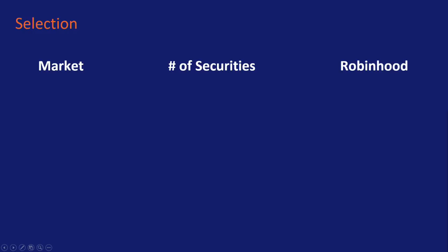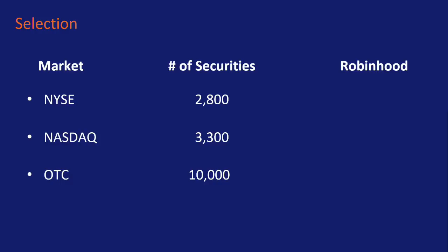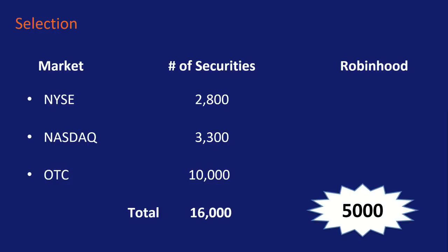Next, let's look at selection — the markets available. On the New York Stock Exchange there are roughly 2,800 securities; NASDAQ has roughly 3,300; and the OTC market has over 10,000 — for a grand total of around 16,000 different securities if you just trade stocks and ETFs. What do you think Robinhood gives you? 5,000.